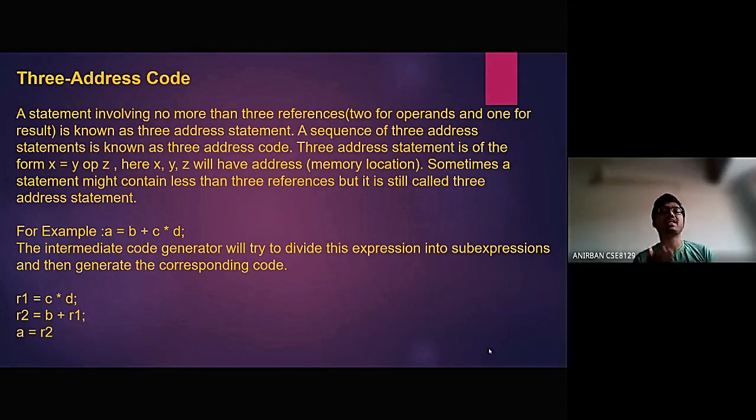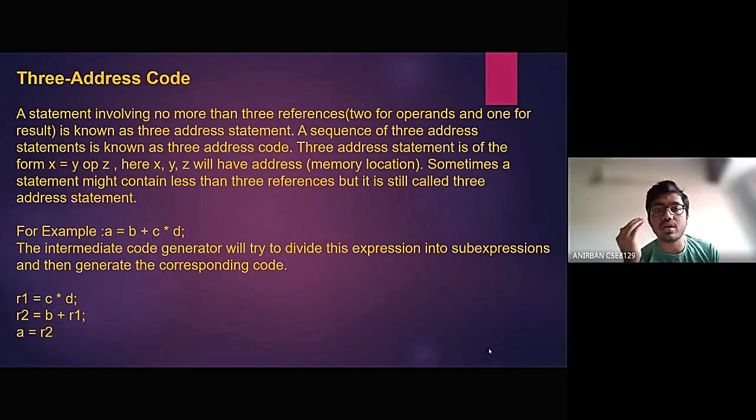Let us see what exactly a three-address code is. A three-address code is a statement involving no more than three references or addresses which are for operands and result is known as three-address statement. A sequence of three-address statements is also known as three-address code. Three-address statement is of the form x equal to y operand z. Here x, y, z are the operands which will have addresses or memory location. Sometimes a statement might contain less than three references but it is still called three-address statement.